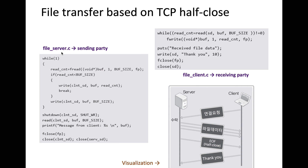Here's a file transfer example based on TCP half-close. The file server (file_server.c) is the sending party and the file client (file_client.c) is the receiving party. The server transfers file content, and after writing it calls shutdown() — meaning it doesn't want to send any more data. But it still calls read() afterward, because even after shutdown() it can still receive messages from the receiving party.